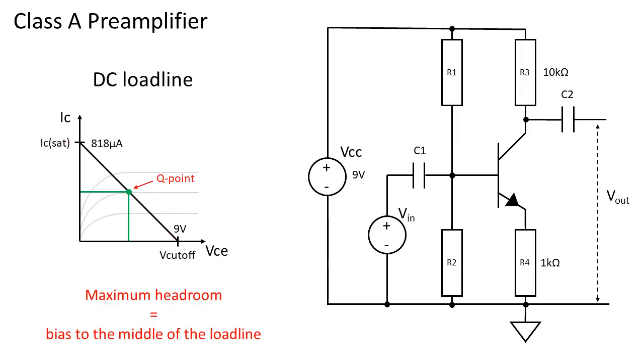To make sure we have maximum headroom we have to bias to the middle of the load line. This results in calculating IQ at the middle of the load line. This is simply IC sat divided by 2 resulting in an IQ of 409 microamps.